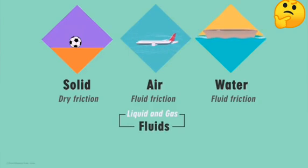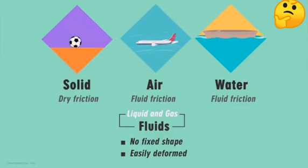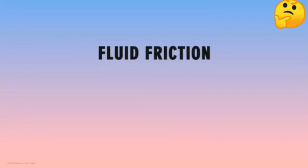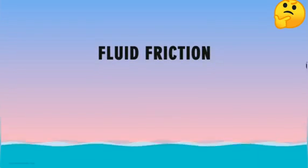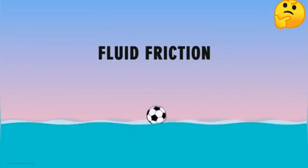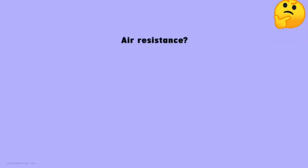Why are liquids and gases considered to be fluids? One common characteristic of fluids is that they have no fixed shape and can be easily deformed. Just like solids, fluids do exert a force of friction when objects move through them.